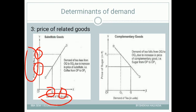Now let us understand complementary goods. As the price of butter increases from P to P1, the demand of bread will decrease. Why? Because they are used together — if the price of butter increases, the demand for butter decreases, and consequently the demand for bread also decreases.